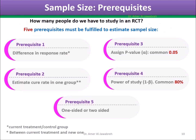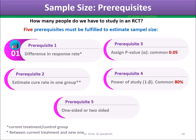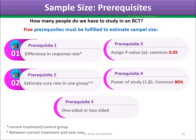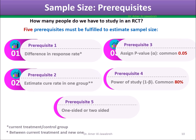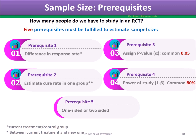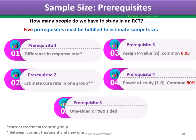Five prerequisites must be fulfilled to estimate sample size: (1) difference in response rate, (2) estimate cure rate, (3) assign p-value alpha — commonly 0.05, (4) power of study (1 minus beta) — commonly 80%, and (5) one-sided or two-sided test.